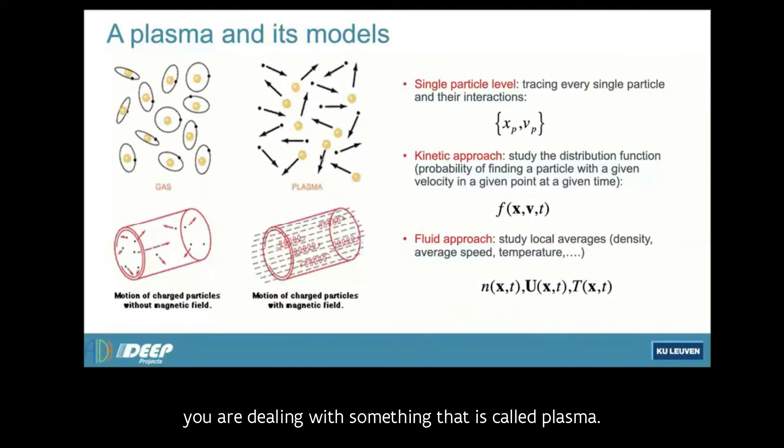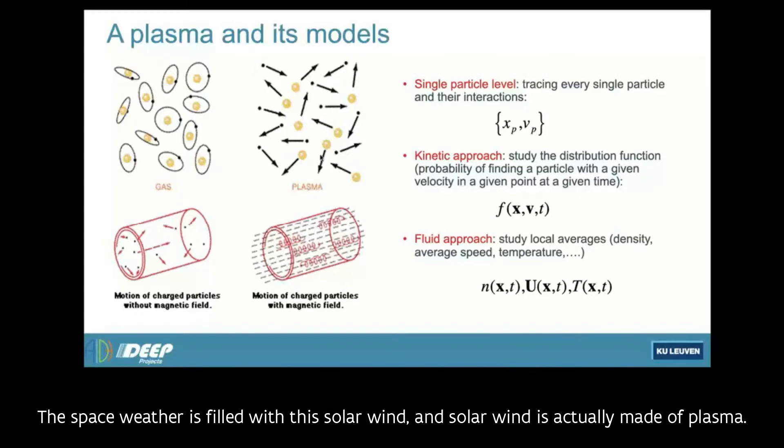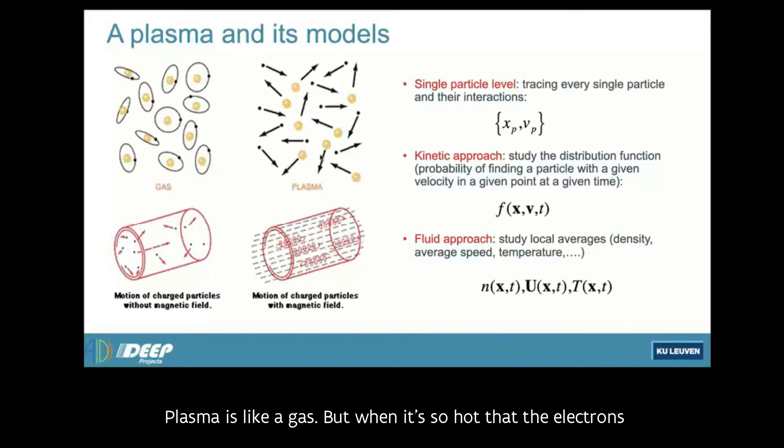When you want to study this system, you are dealing with something called a plasma. The space weather is filled with this solar wind. The solar wind is actually made of a plasma. Plasma is like a gas, but when it's so hot that the electrons become detached from the ions. So the atoms break into their components, the nuclei on one side, which in the solar wind is mostly hydrogen, so it's a proton and the electrons. And they move around.